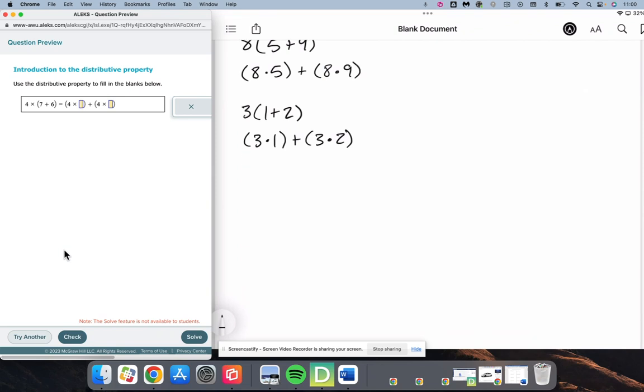Next we have 4 times 7 plus 6. And that's equivalent to 4 times 7 plus 4 times 6. It's equivalent to 3 times 8 plus 3 times 7.